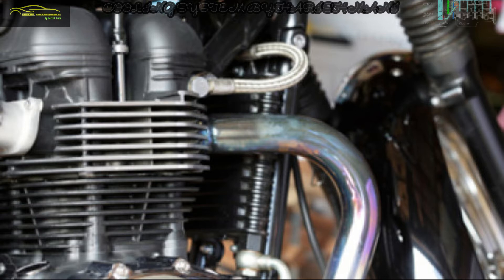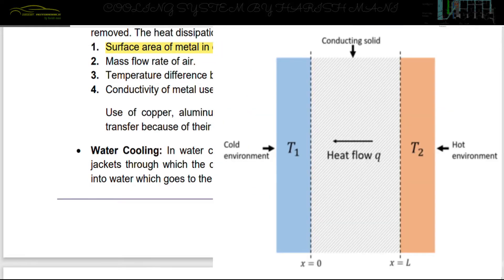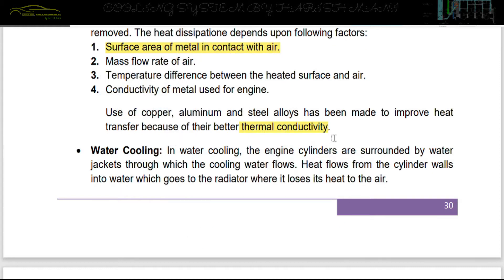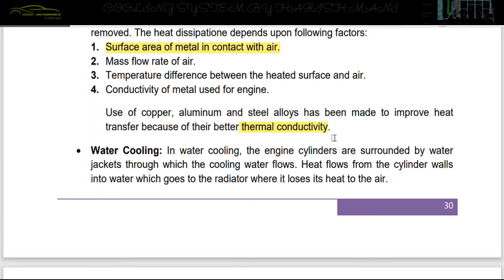You can remove heat by increasing the surface contact area using fins. There is an increase in heat dissipation by using a thick fin source. In air cooling systems, the main housing material used is aluminum for cooling.